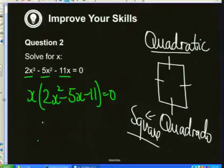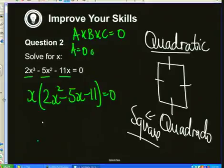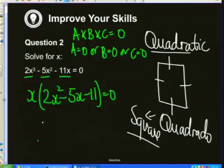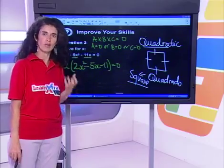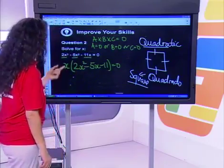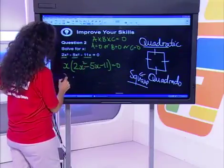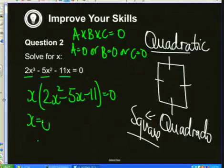Remember: if you have a times b times c equals 0, then a is 0, or b is 0, or c is 0. We don't want to take a term to the other side — that makes it impossible to solve. So we have x equals 0 as one solution, because 0 minus 0 minus 0 gives 0. And we still have to solve the quadratic factor 2x squared minus 5x minus 11.